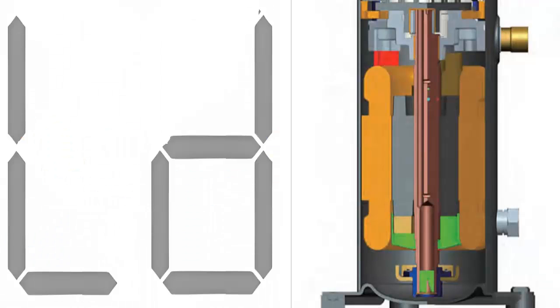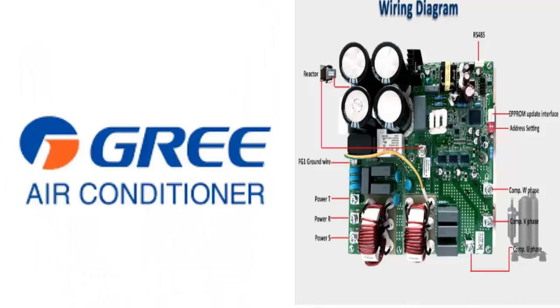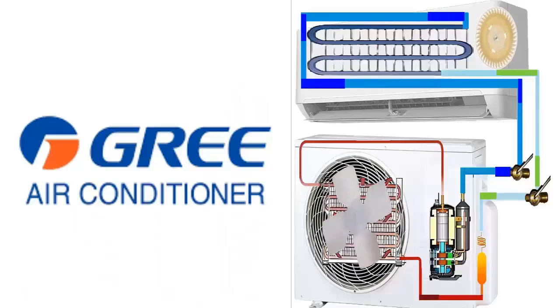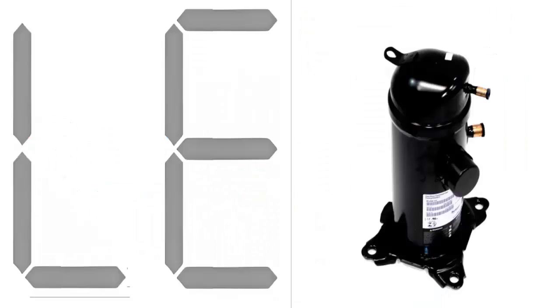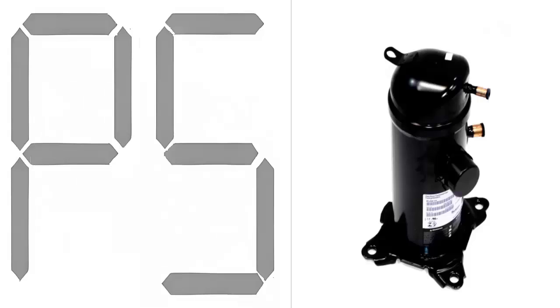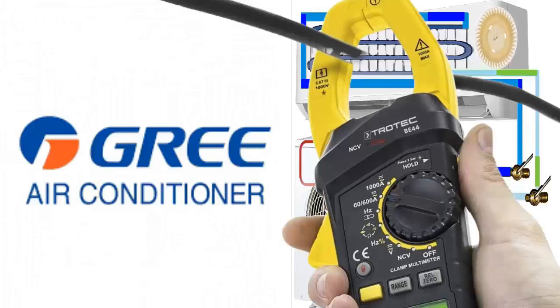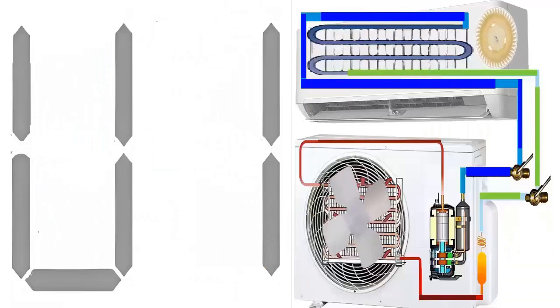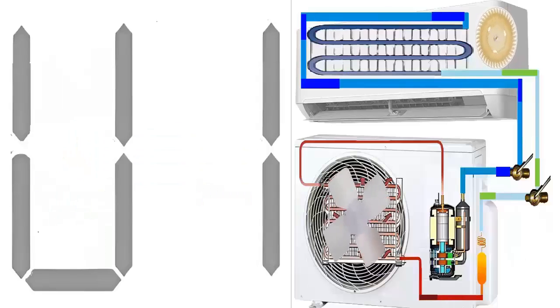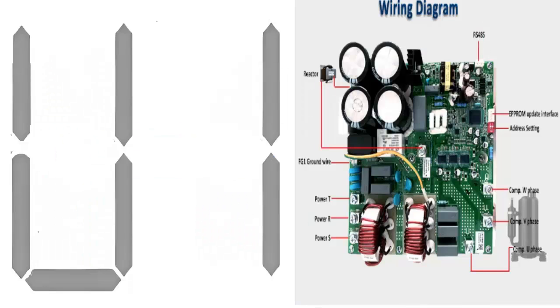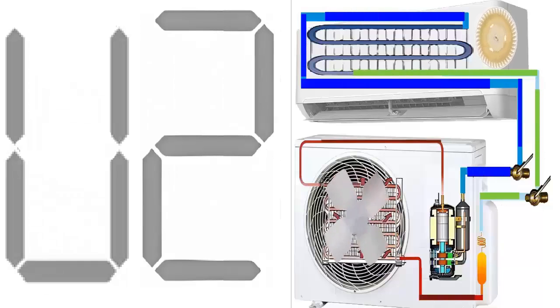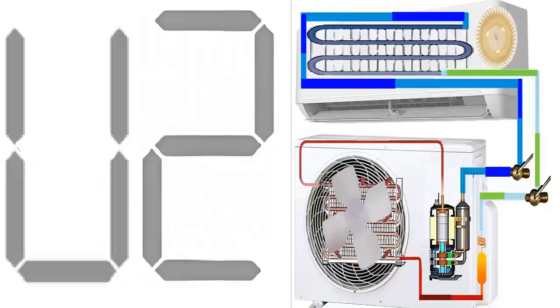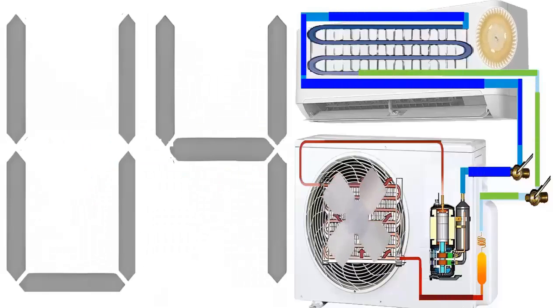Code LD, Compressor Phase Loss Protection; Code LE, Compressor Rotor Lock Protection; Code P5, Compressor Phase Overcurrent Protection; Code U1, Compressor Phase Current Detection Circuit Malfunction; Code U2, Compressor Phase Loss Protection; and Code U4, Compressor Reversal Protection.